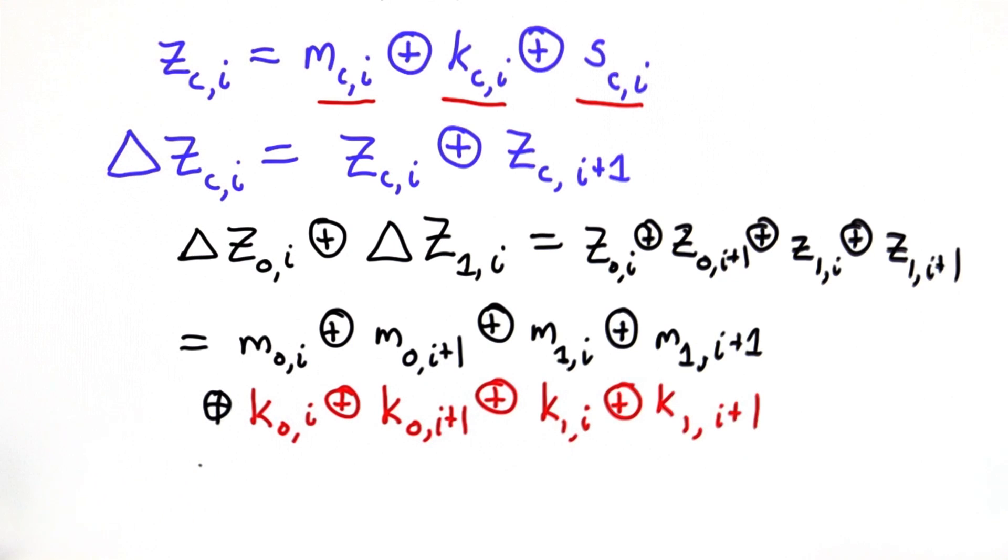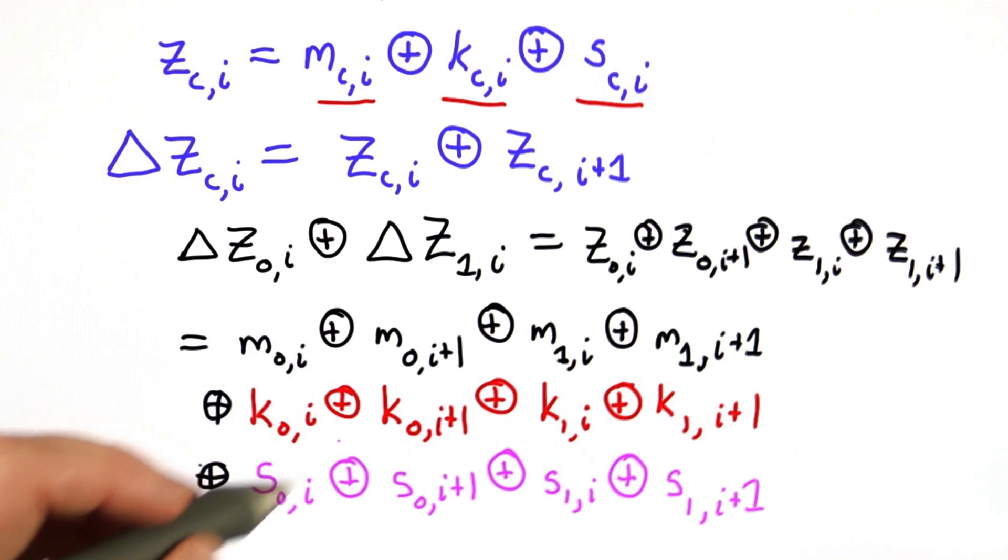We have this for the s bits as well. I want to ask a brief quiz here. For each of these combinations, we'll call them delta m, delta k, and delta s.